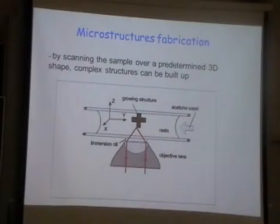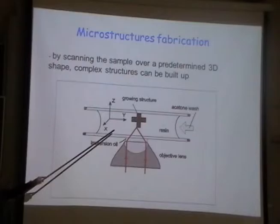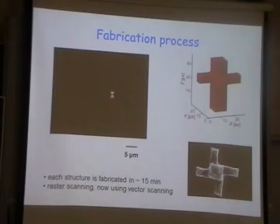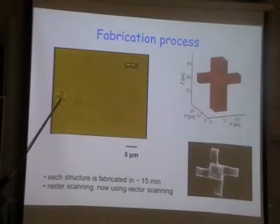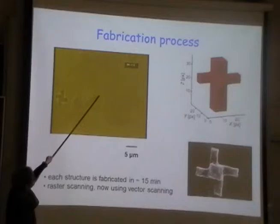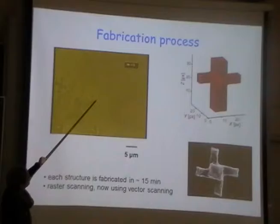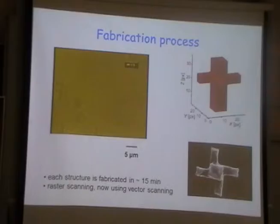Here's the production: we produce these shapes — the shape can be anything — by switching the light off and on and moving the slide, programming the structure. Here is a little offset cross being produced: you can see the laser beam there, we wiggle the stage in a sequence, and the cross is being built. It's a very slow process — the structure takes about 15 minutes — but it works.